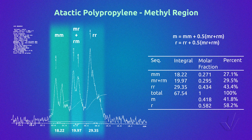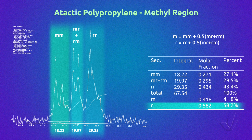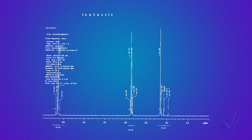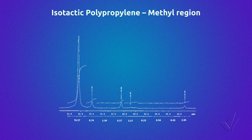In this case, we have an atactic polypropylene with 41.8% isotactic diad and 58.2% syndiotactic diads. This is a spectrum of an isotactic polypropylene made in a 300 MHz equipment. To study tacticity, we need to expand the methyl region. Here we have the expansion of the methyl region of an isotactic polypropylene.